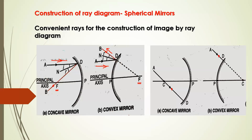This is the first ray that we will consider for drawing the ray diagram. For the second rule, a ray is incident and passing through the center of curvature of a concave mirror. After reflection, it is following the same path — it is coming from the opposite direction. So a ray passing through the center of curvature of a concave mirror will retrace its path.